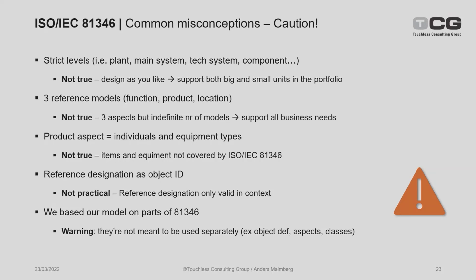Another common misconception is that there are only three reference models — one function-oriented, one product-oriented, and one location-oriented. This is not true either. You would probably have one product-oriented model, but at least two function-oriented ones if your business is complex enough — for instance, separating infrastructure from process equipment — plus one or several location aspects.